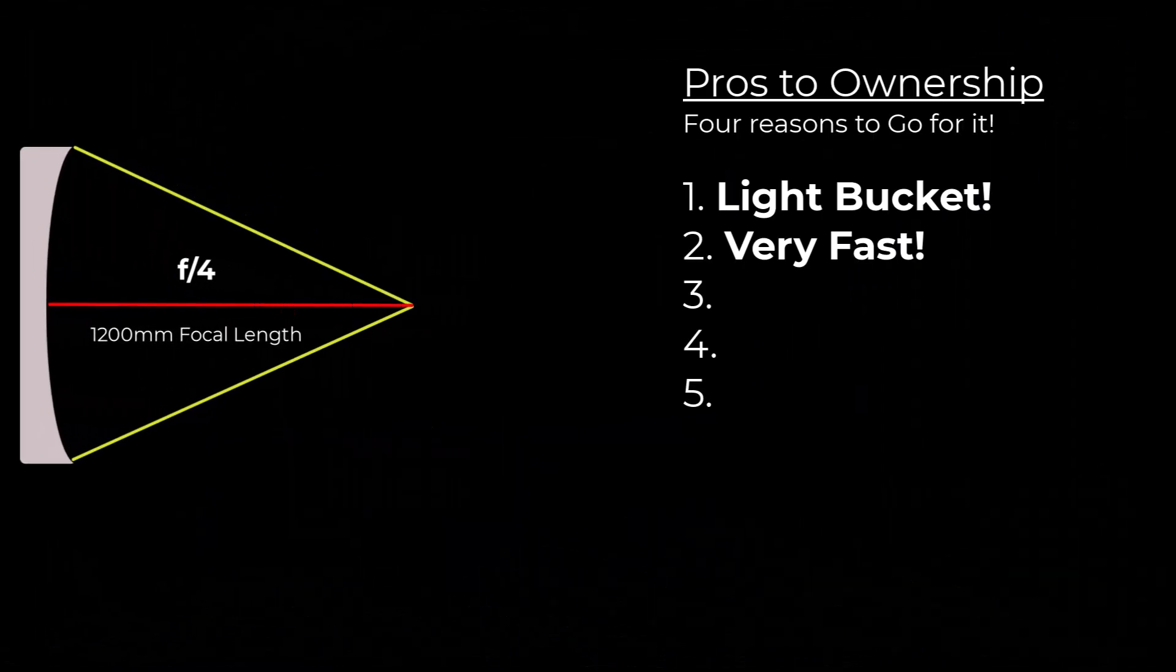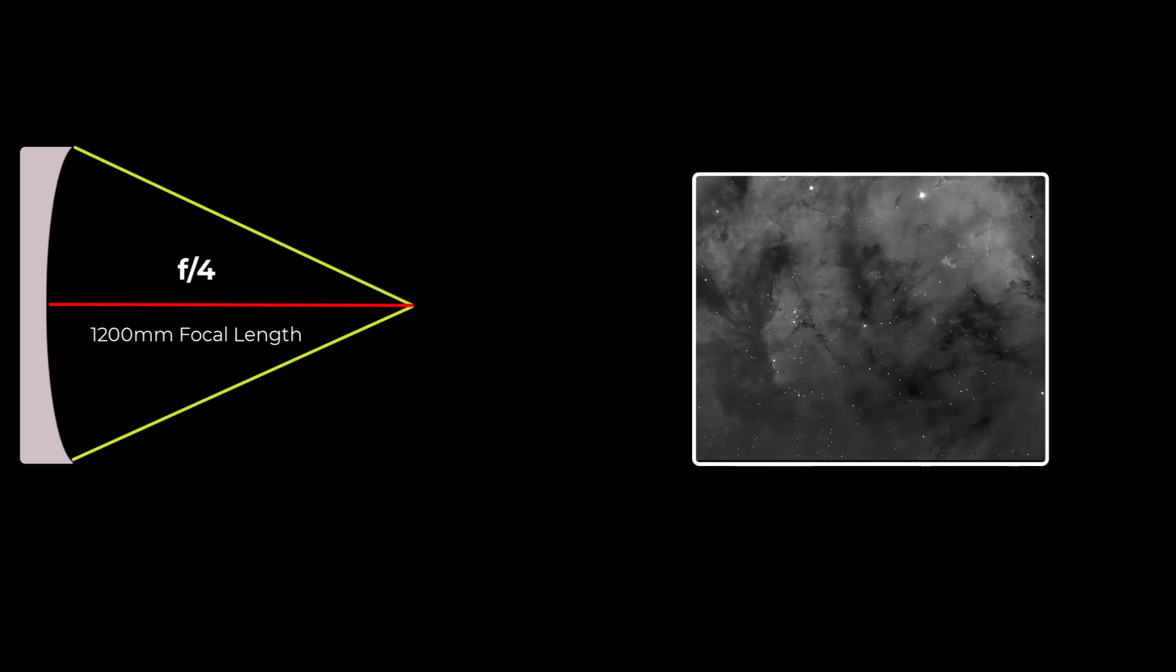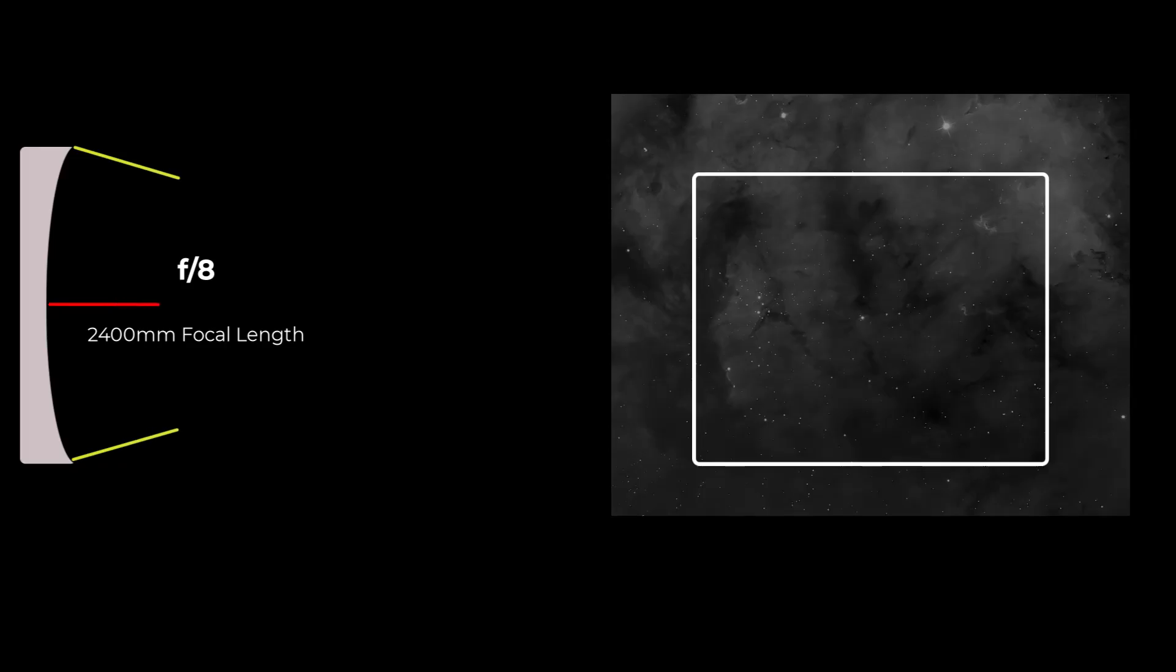Number two, this is a very fast telescope. It's an astrograph. It has an F4 focal ratio, which is a very steep light cone, which concentrates all that gathered light into a smaller area on the focal plane when compared to higher focal ratios, which have more shallow light cones. So the result is much faster imaging times.